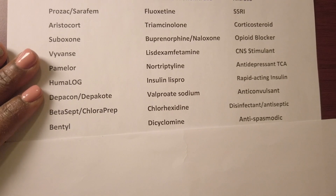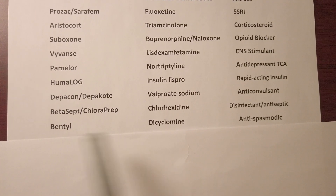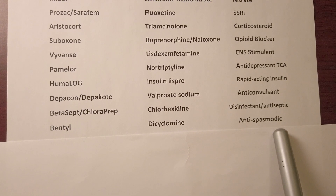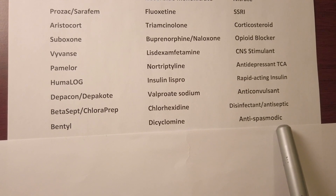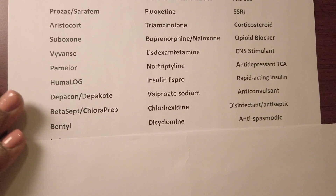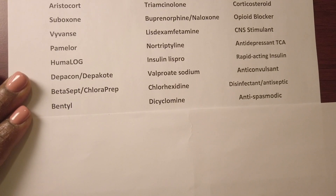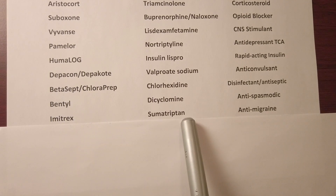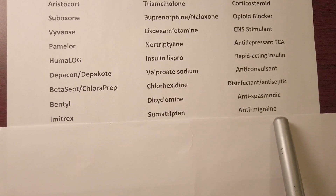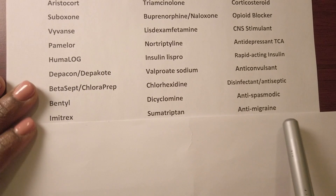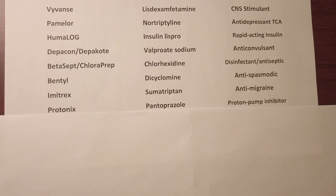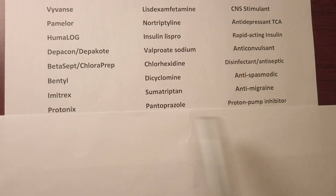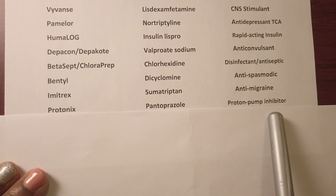Next we have Bentyl, generic name dicyclomine, it's an antispasmodic used for stomach and abdominal cramps. Next we have Imitrex, generic name sumatriptan, used for migraines. We have Protonix, generic name pantoprazole — it's a proton pump inhibitor.